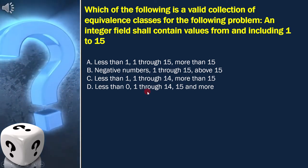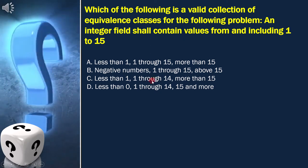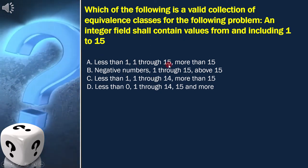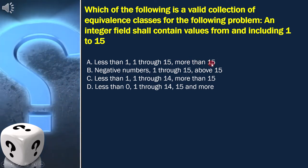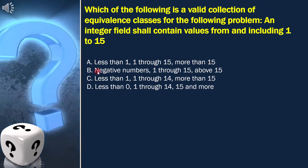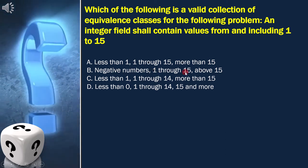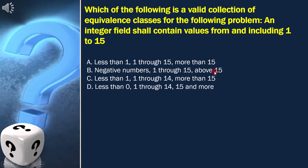And these are our options. Option A is less than 1, 1 through 15, more than 15. Option B is negative numbers, 1 through 15, above 15.